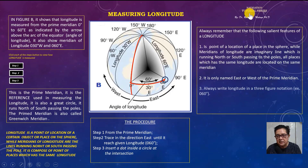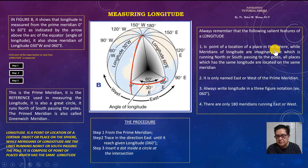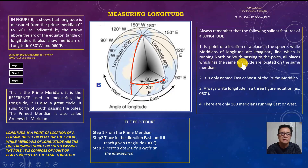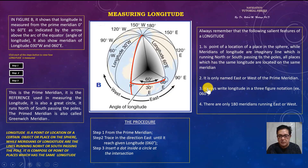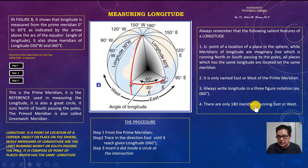Always remember the following salient features of longitude: it is the point location of the place on the sphere, while meridians of longitude are imaginary lines running north and south passing through the poles. Places with the same longitude are located on the same meridian. It is only named east or west of the prime meridian. Always write longitude in three-figure notation — for example, 60 is written as 060. There are only 180 meridians running east or west.